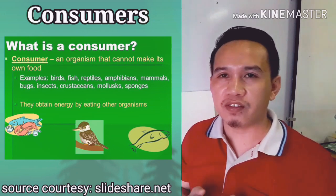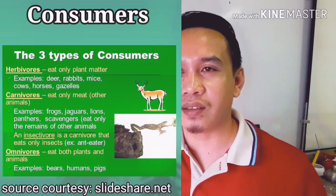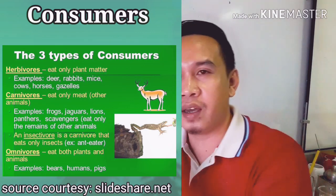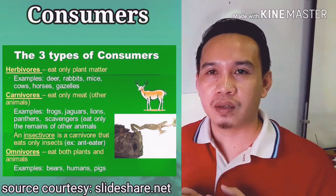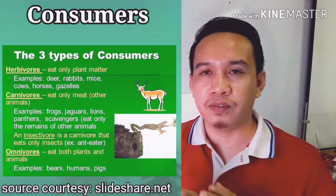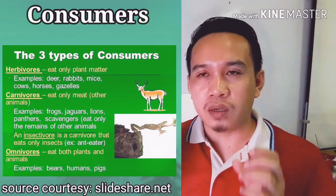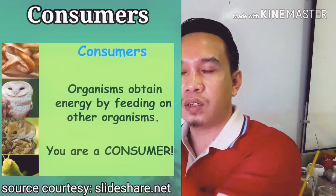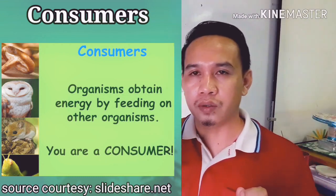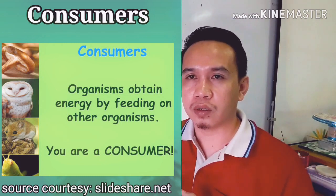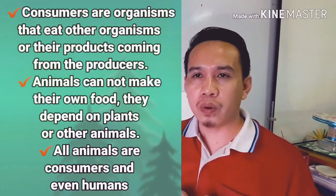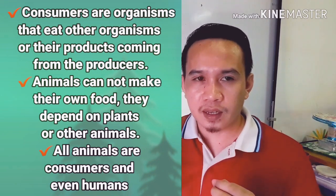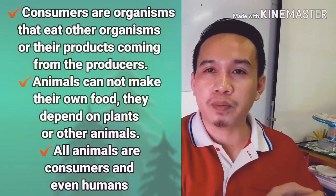Next, we are going to discuss consumers. What are consumers, and what are their job or functions within the ecosystem? As we talked earlier, humans, animals, and all other types of organisms depend on what is given by the producers. We depend on producers, especially from plants, fruits, and vegetables. Consumers are organisms that eat other organisms or their products coming from the producers.